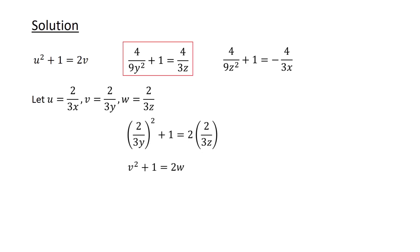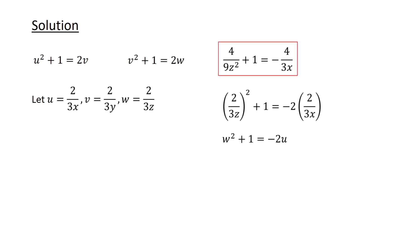Similarly for the second term, we get v² plus 1 is equal to 2w. And lastly for the third term, we get w² plus 1 is equal to minus 2u.